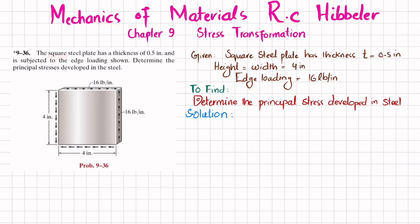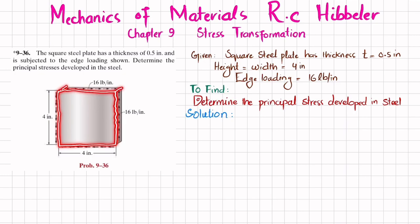The statement is: the square steel plate has a thickness of 0.5 inch and is subjected to the edge loading shown. Determine the principal stresses developed in the steel. This is a square steel plate that is 4 by 4 inch, with thickness 0.5 inch, acted upon by edge loading of 16 pounds per inch. We will solve it using two methods: the stress transformation method and Mohr's circle.